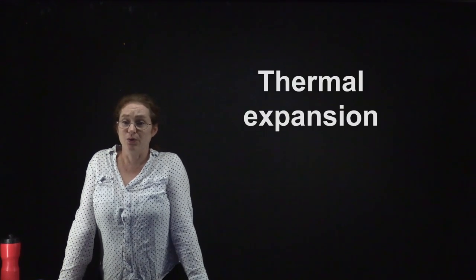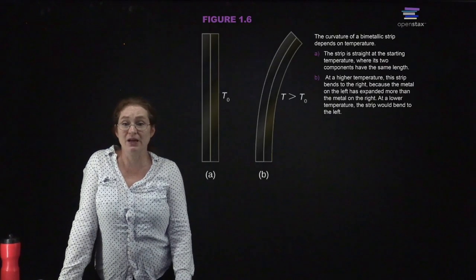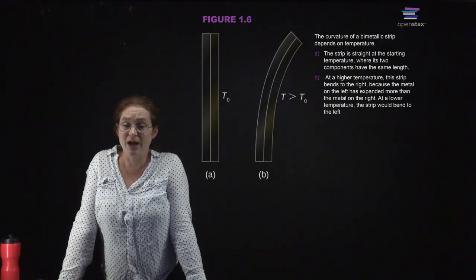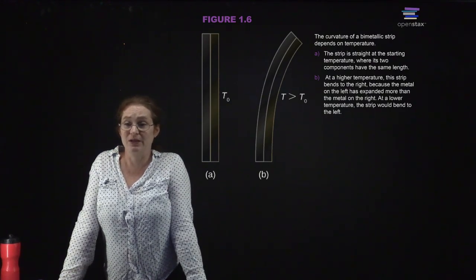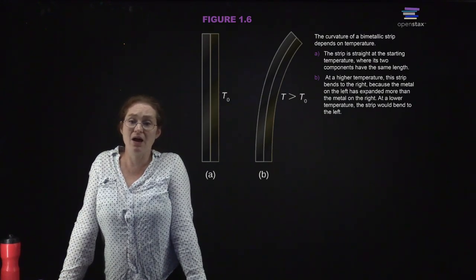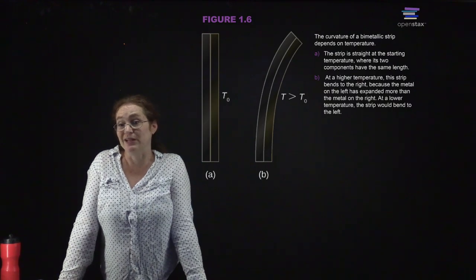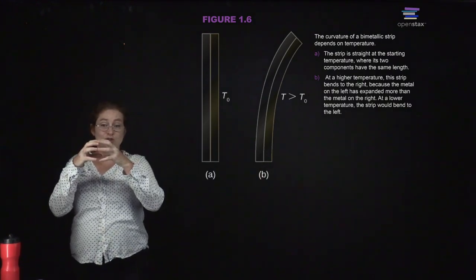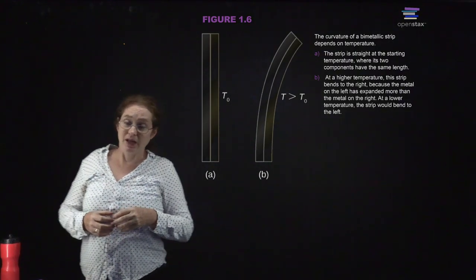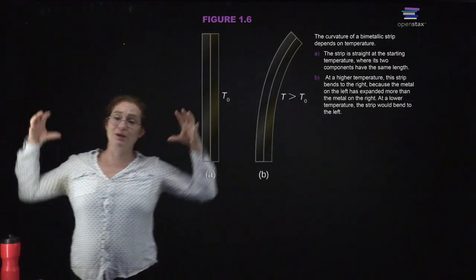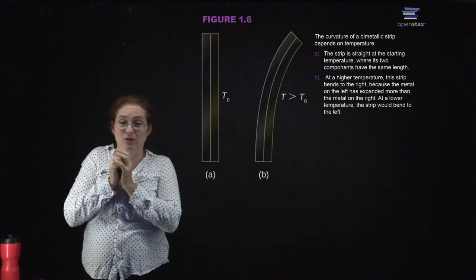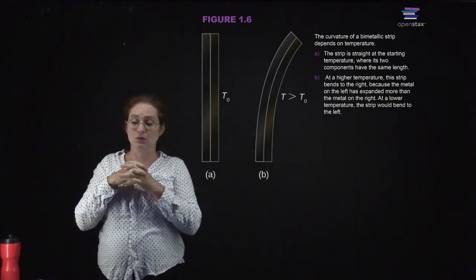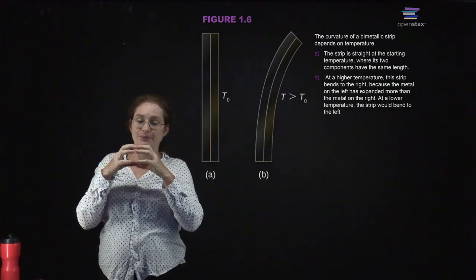Thermal expansion: you may have noticed that different objects expand and contract more or less depending on what they're made of. If you blow up a balloon and stick it in the freezer, it's going to shrink pretty significantly. Gas happens to expand and contract rather significantly with temperature.